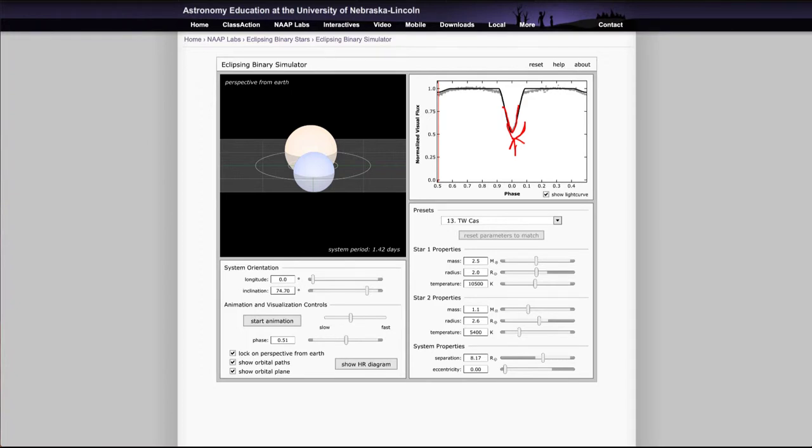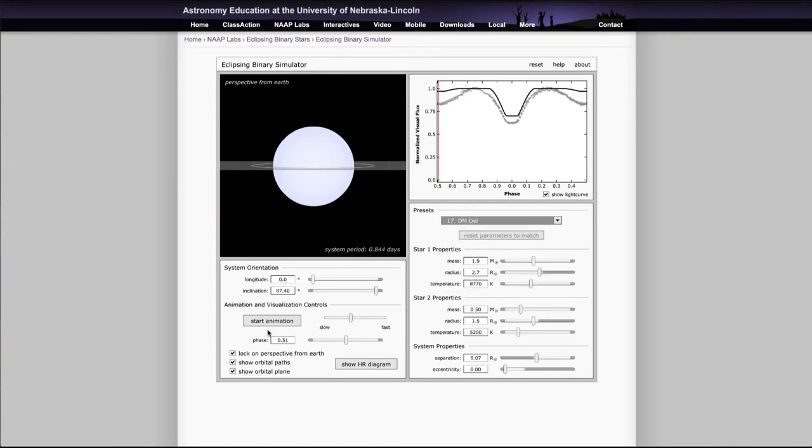Now, there are examples where it is completely blocked out. And we can look at another example like that to see what happens when the light is completely blocked out. And let's look at this one, DM Del.